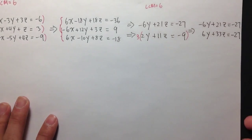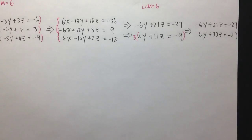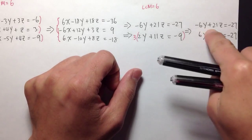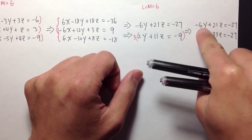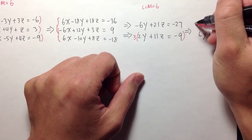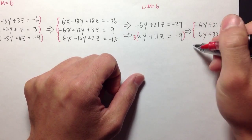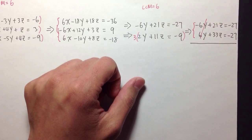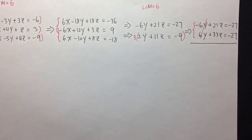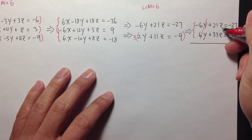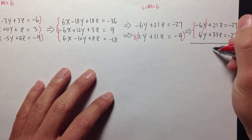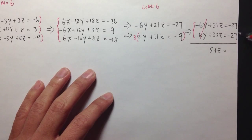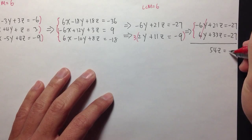Now the y's have the same coefficients with opposite signs, so we can add the two equations. Negative 6y plus 6y cancels out. Then 21z plus 33z is 54z, and negative 27 minus 27 is negative 54.